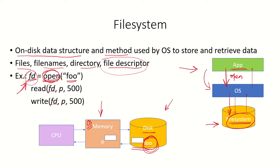Using this file descriptor we can perform a read operation. We can give the file descriptor name, the pointer to the buffer in memory, and the size. So we are using the file descriptor fd to reference the file foo, and we are saying we want to read it into a buffer pointed to by p, with a maximum size of 500.